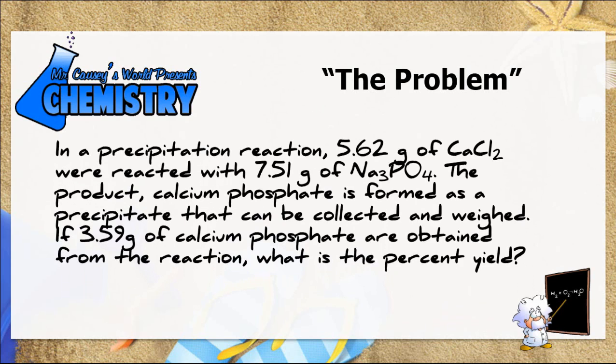were reacted with 7.51 grams of sodium phosphate. The product, calcium phosphate, is formed as a precipitate that can be collected and weighed.